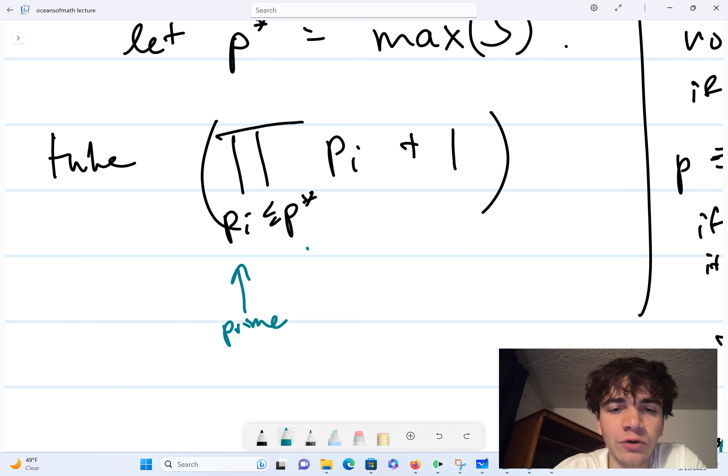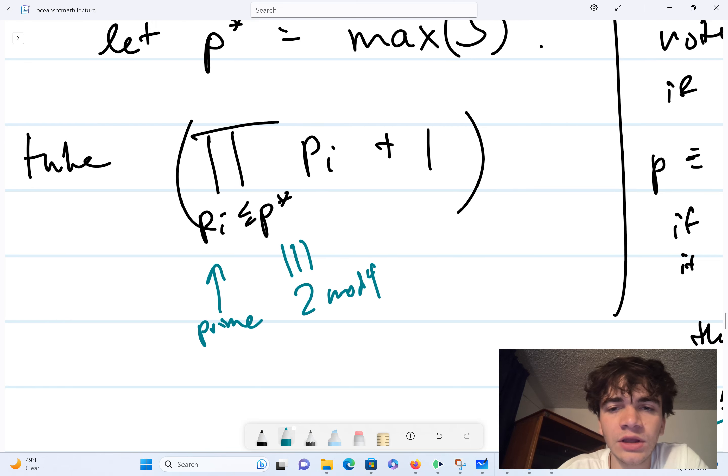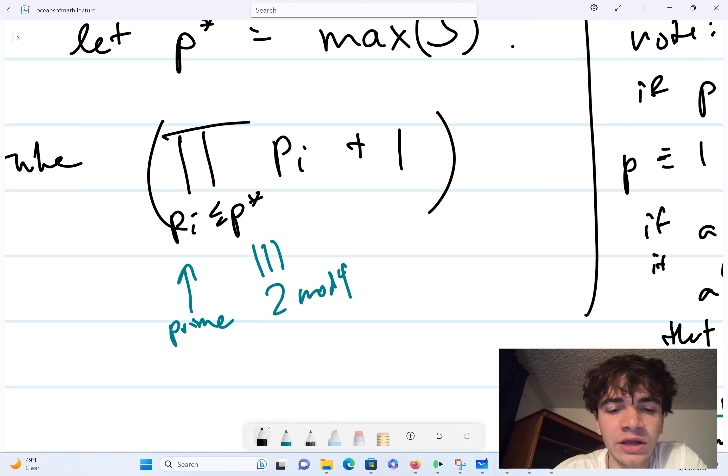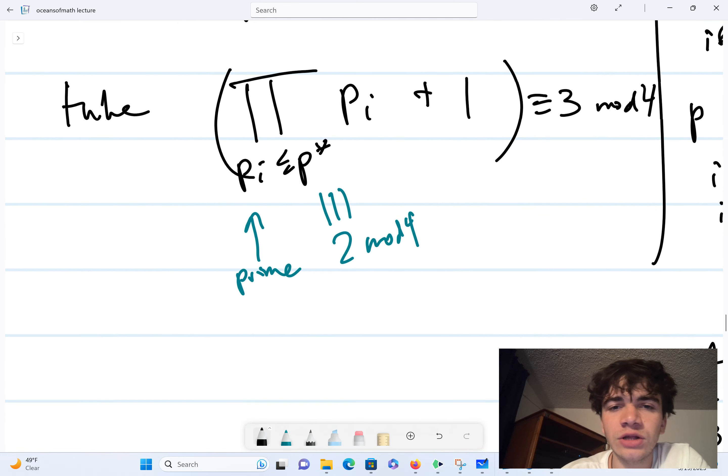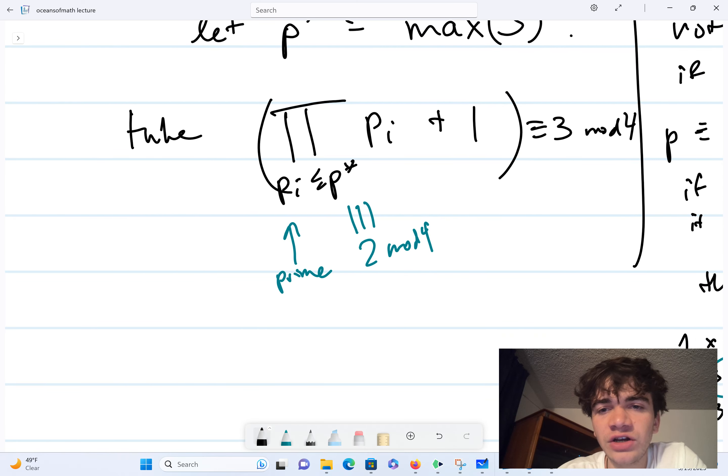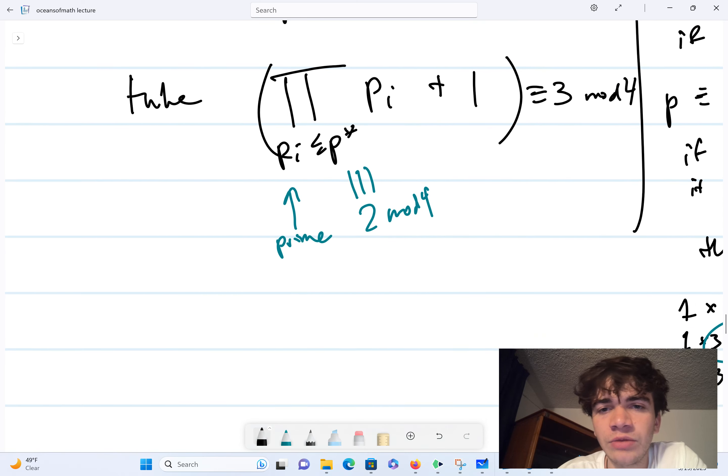And therefore, this thing has to be equivalent to 2 mod 4. And so when I add 1 to it, it just becomes equivalent to 3 mod 4. And this is a crucial observation. So now that we've constructed a number that's equivalent to 3 mod 4.